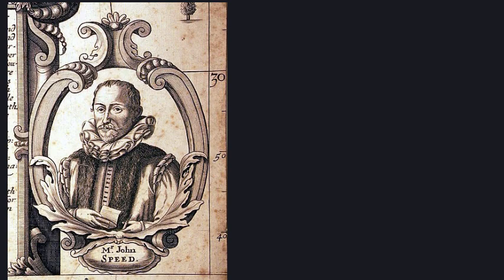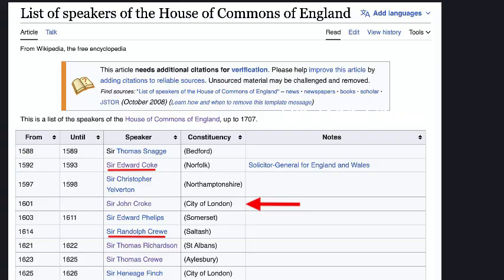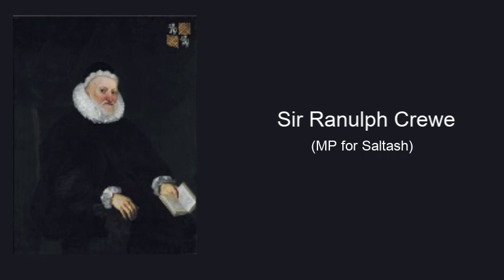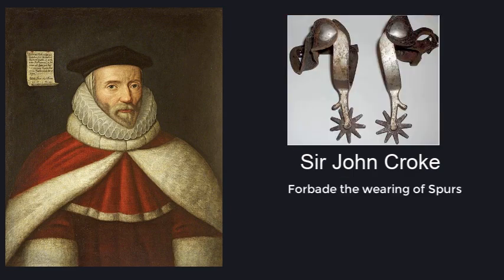Now we're going to focus on Sir John Croke, an alleged speaker of the House of Commons in 1601, situated between Sir Edward Coke and Sir Ronald Crew, an MP for Saltash. The Bard obviously had a sense of humor by alluding to Frogroe, Nantwich, by naming this alias Sir John Croke.